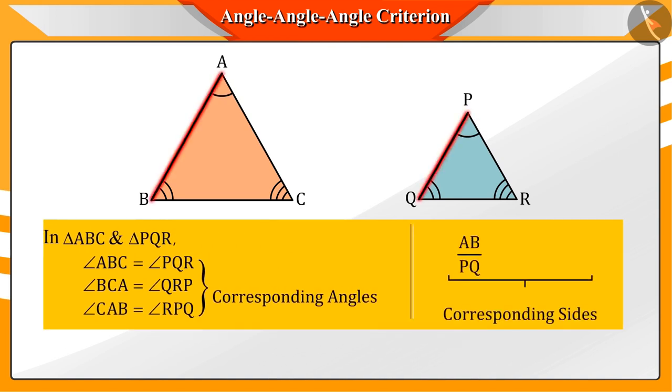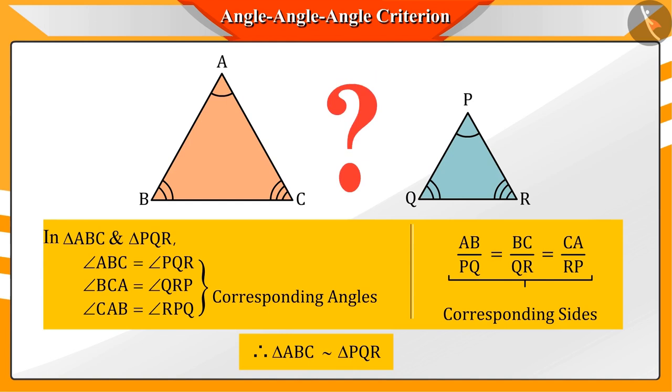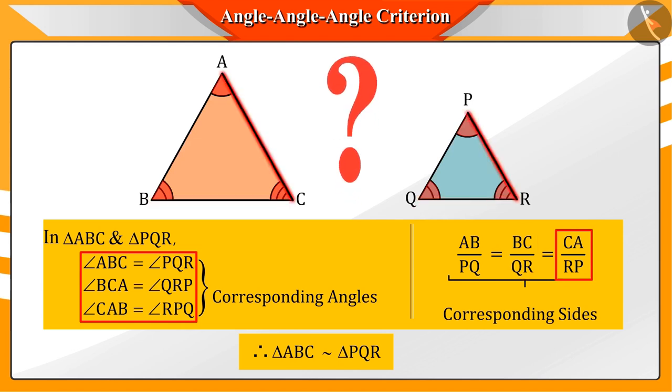Now a question that arises is that for testing the similarity of triangles, should we always have to check if the pairs of corresponding angles are the same and the ratio of the corresponding sides are also the same?